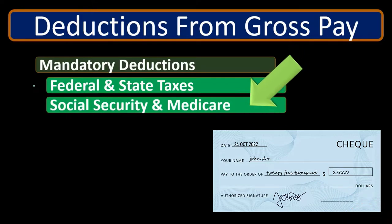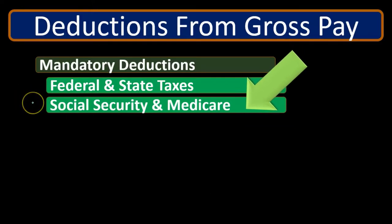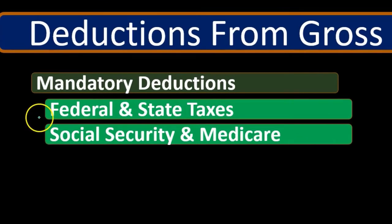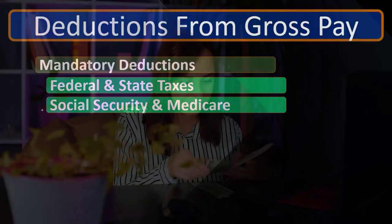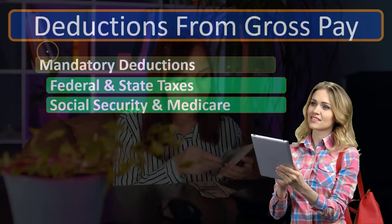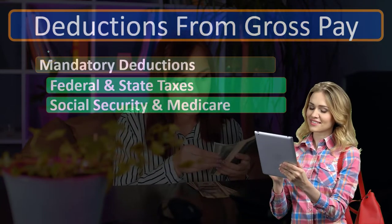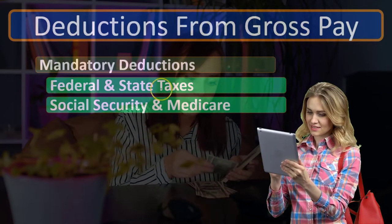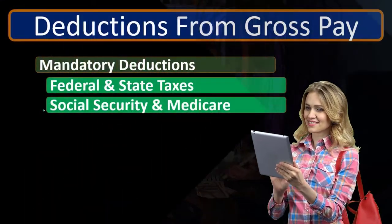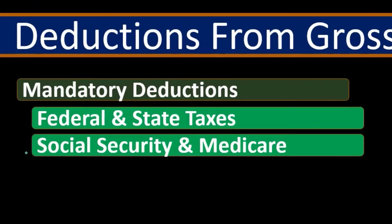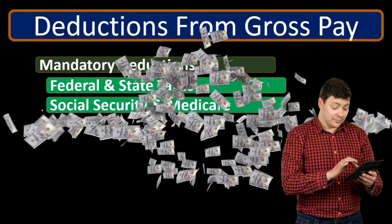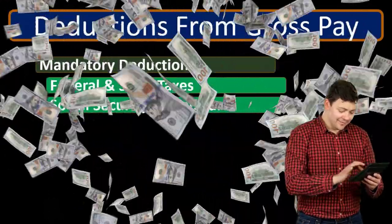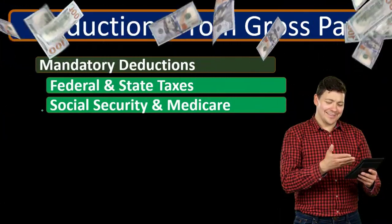Then we have Social Security and Medicare — the same type of idea. These are federal taxes, and we are once again required to take them out. It's not a payroll tax in this context for the employer; it's being paid by the employee. When we look at our pay stub and what's being pulled out, that's what we theoretically paid — it came out of our taxes.